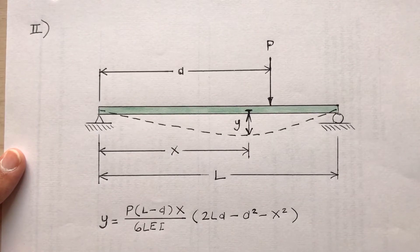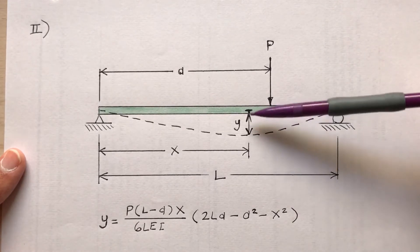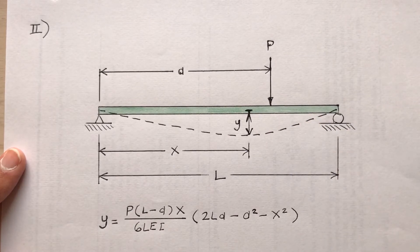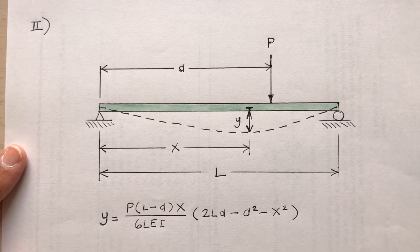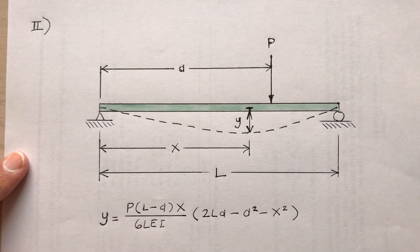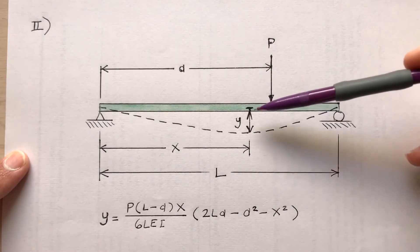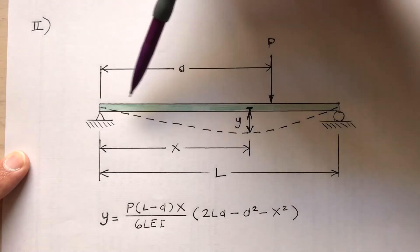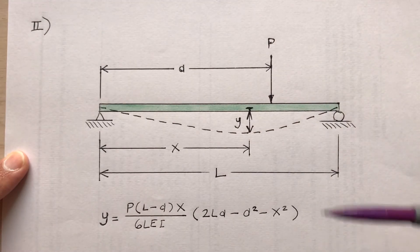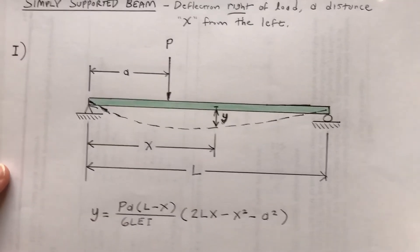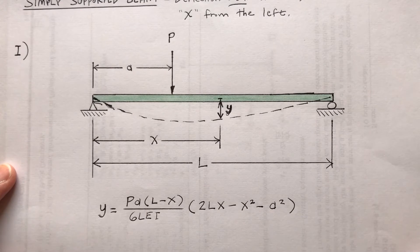In Case 2, we're interested in the deflection at location x from the left side, but this time the applied load is to the right of that location, so we use a different formula involving P, L, A, X, E, and I. You could program either of these formulas into a spreadsheet to find displacement at a variety of x locations, depending on where the load is located.